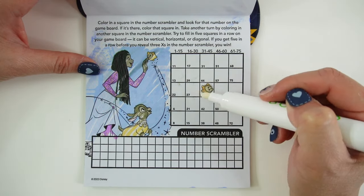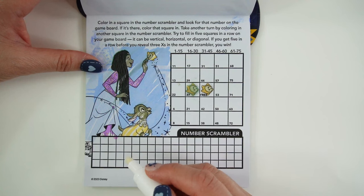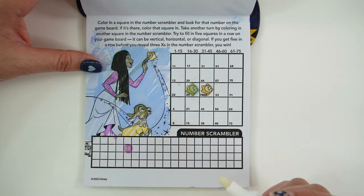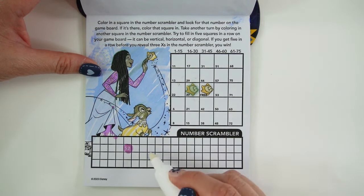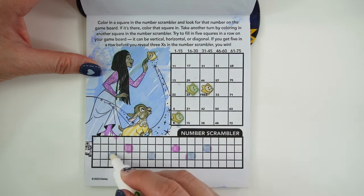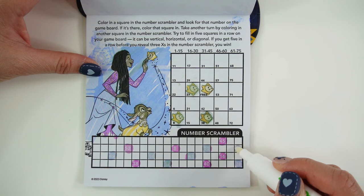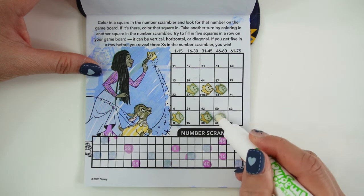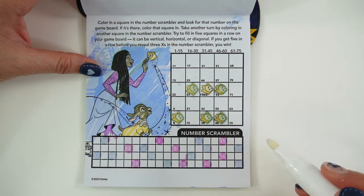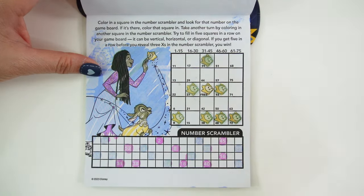Okay, let's start by coloring in 27. Oops, we did it wrong. We're supposed to color it in here first. We got our first x.